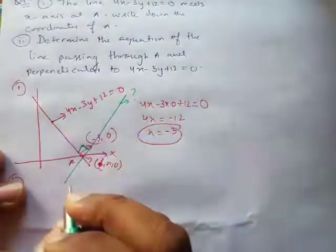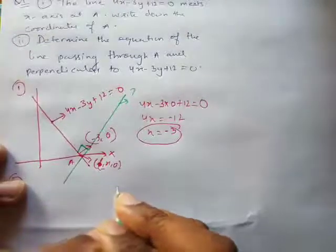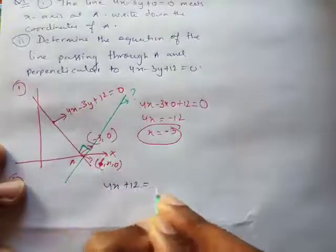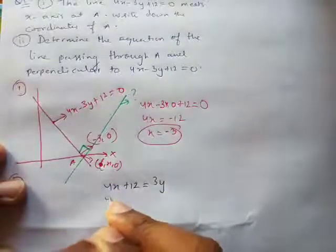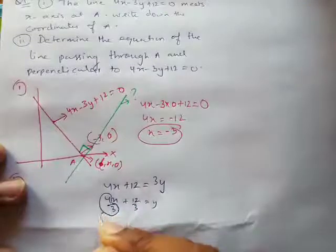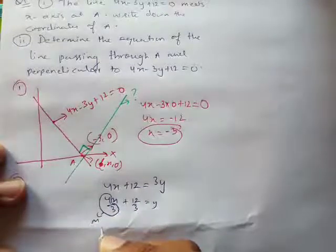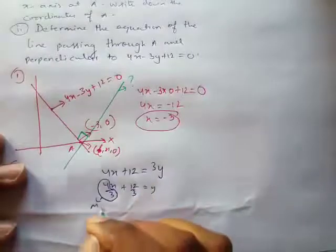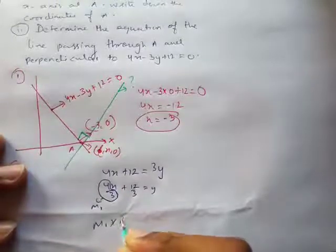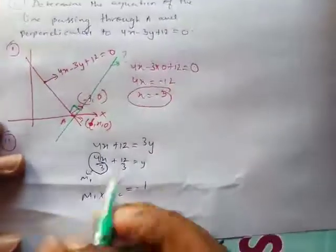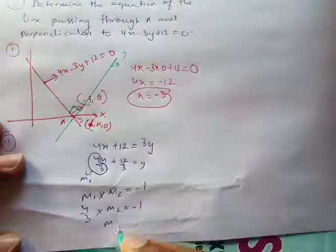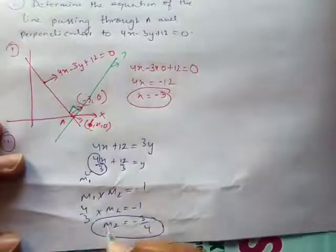First I'll find the slope M of the given line. Rearranging 4x minus 3y plus 12 = 0: 4x + 12 = 3y, so y = (4/3)x + 4. Therefore m1 = 4/3. Since both lines are perpendicular, I use the formula m1 times m2 equals minus 1. So (4/3) times m2 = -1, giving m2 = -3/4.